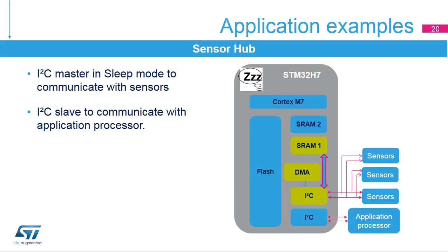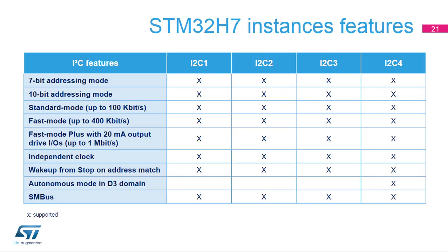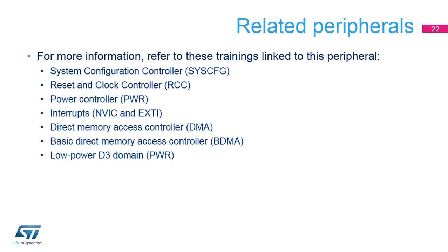Here is an example of a sensor hub application that requires several I2C peripherals. One or several I2C masters are used to interface with external sensors, and an I2C slave is used to communicate with the application processor. STM32H7 microcontrollers embed four I2C peripherals, all with the same set of features. For more information related to this peripheral, you can also refer to these trainings: System Configuration Controller, Reset and Clock Controller, Power Controller, Interrupts Controller, Low Power D3 Domain, and Direct Memory Access Controller.